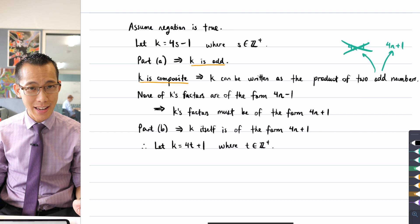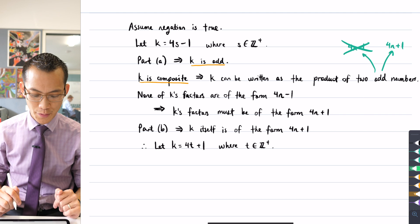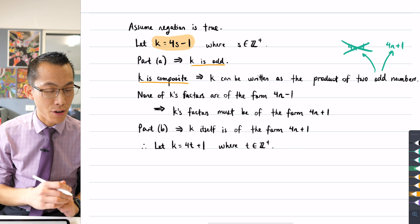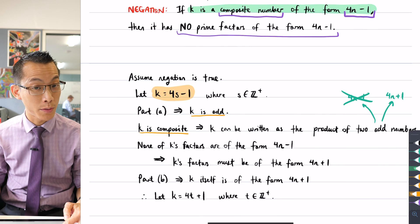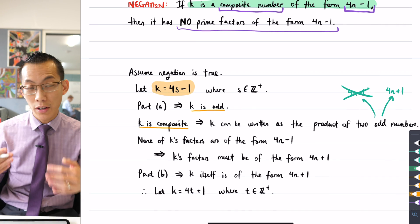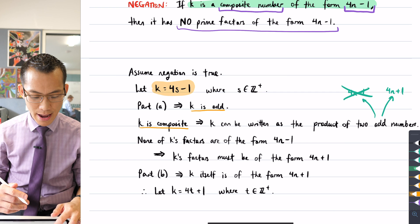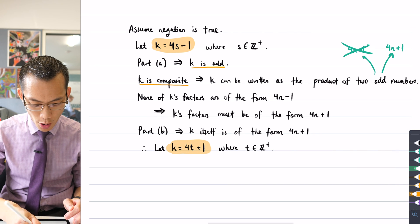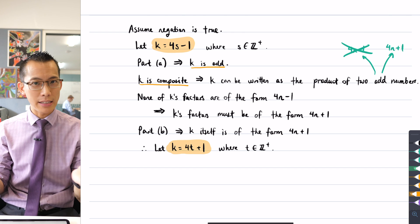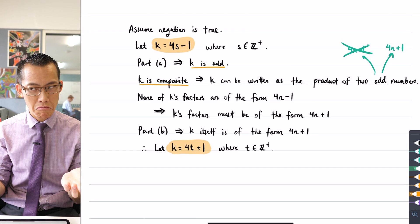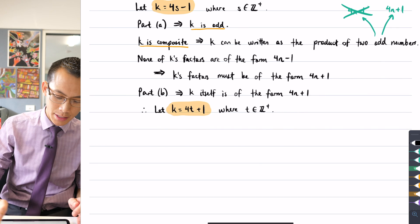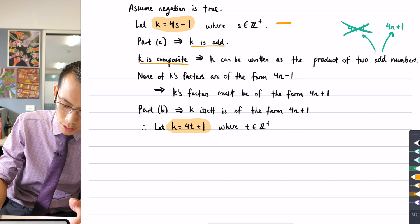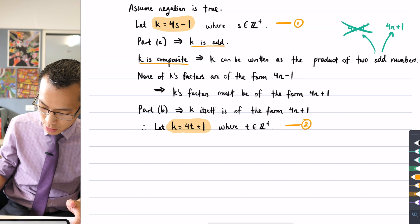But hold on a second, and maybe you're starting to see why this is going to cause an issue. I've got this statement about what k is from my assumption, that was 4s minus 1. I worked through the assumption and also what I had in part A and part B and I determined that I could also write k as 4t plus 1. So the same number, apparently, I can write in two different forms. Let's see what that leads to.